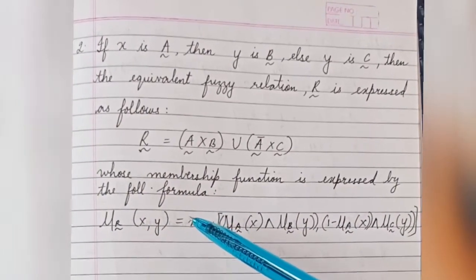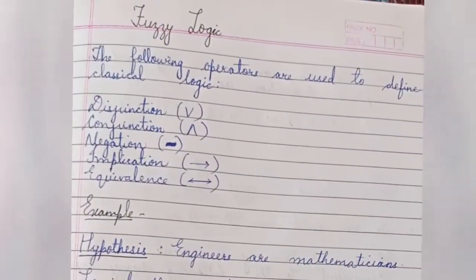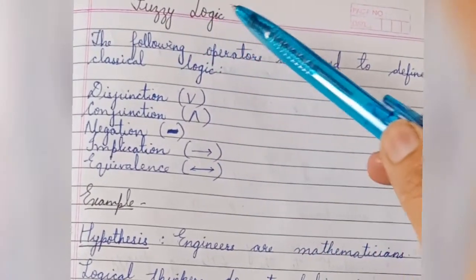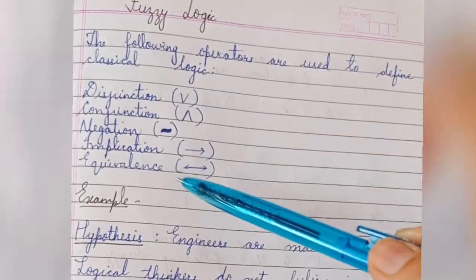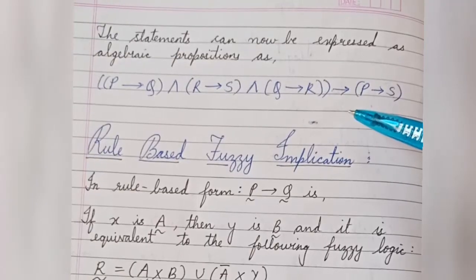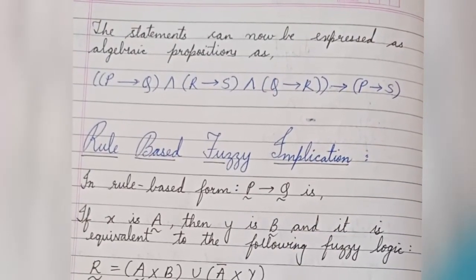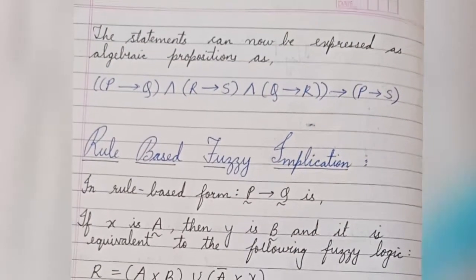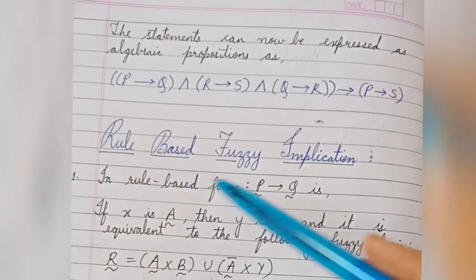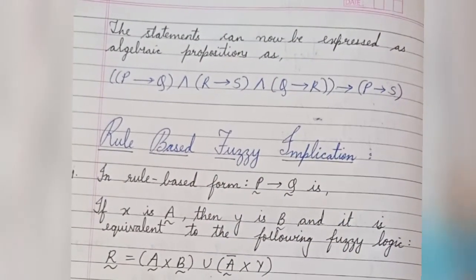In this video we learned what fuzzy logic is and what the operators of fuzzy logic are. We discussed how statements can be written as algebraic propositions, and we studied rule-based fuzzy implication — two rules were given.